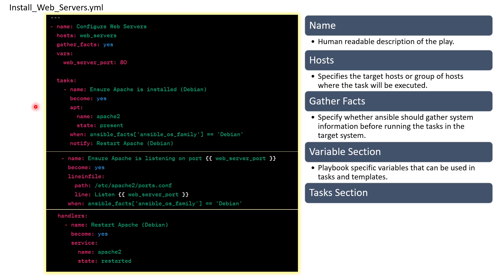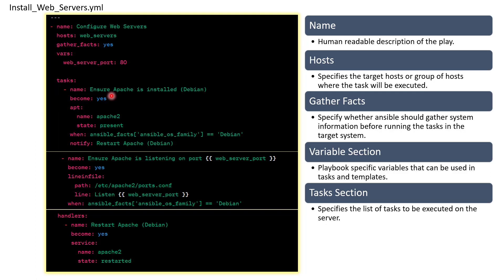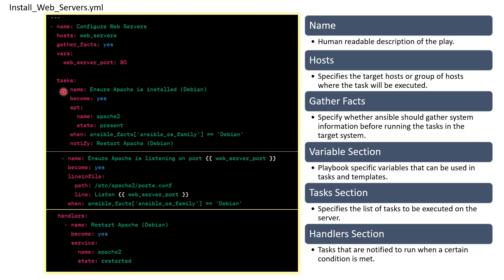The tasks section is where you define multiple tasks or a single task. Here we have created a task with a name 'ensuring Apache is installed' — you should give a descriptive name that defines the task. The playbook is written in a way that acts as documentation itself. Under the task we have 'become: yes' to request elevation to root user, and we are using the apt module. Ansible has many modules — for creating users, installing or managing packages, and so on — all documented in the Ansible docs.